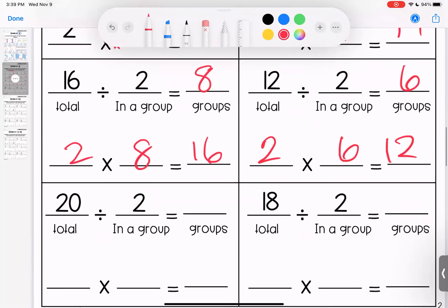Twenty divided by two, this is a big one, is ten. I can check it because two times ten is twenty. Eighteen divided by two is nine because two times nine is eighteen.